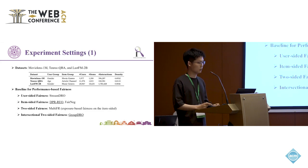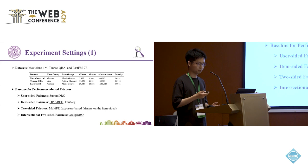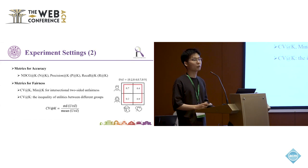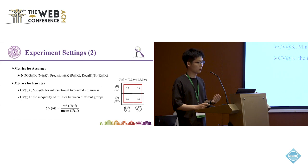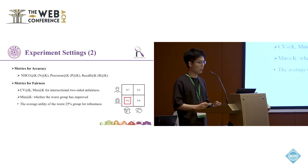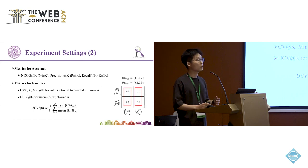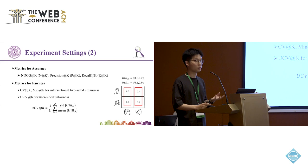Finally, experiments. We use three real datasets: MovieLens, Tenrec, and LastFM, and here are our baselines. We evaluate from accuracy and fairness perspectives. For fairness, we use CV and mean to measure intersectional two-sided fairness. CV measures the inequality of utilities between different groups, while mean measures the utility of the worst-performing intersectional group. We also apply CV to the user side and item side to measure user and item fairness.